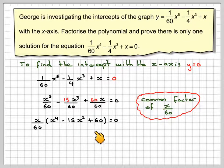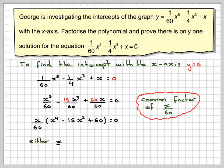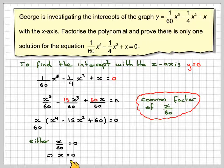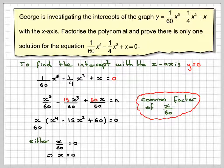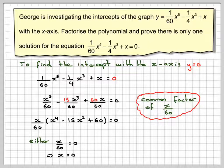What we have now turned the bracket into is a quartic. For there to be solutions, either x/60 = 0, which gives x = 0. So we've found one solution, x = 0. Putting that back in gives y = 0, so there is only one solution so far, and this graph only cuts the axis at x = 0, y = 0.